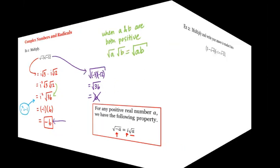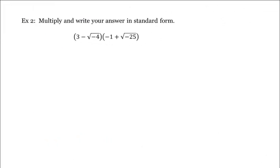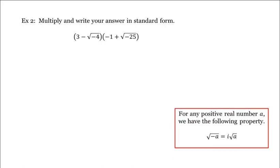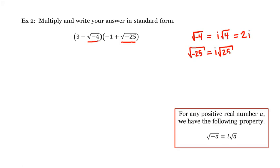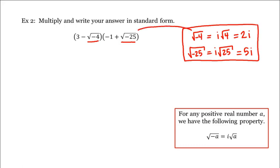Let's look at another example. Let's multiply and write our answer in standard form. Again, we'll use this property on each of these square roots. The square root of negative 4 is i times the square root of 4, or 2i. And the square root of negative 25 is i times the square root of 25, or 5i. Putting these in gives us 3 minus 2i, times negative 1 plus 5i.